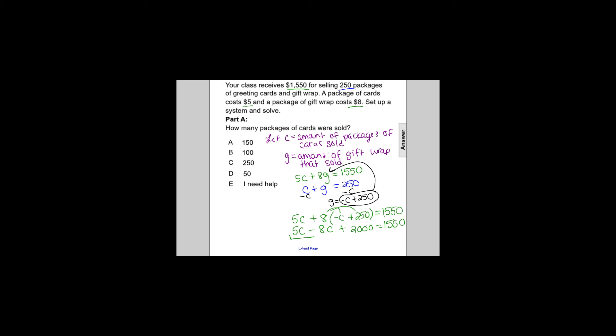We'll now combine the like terms. 5C minus 8C is negative 3C. And we'll also subtract 2,000 from both sides of the equation. So we get negative 3C equals negative 450.